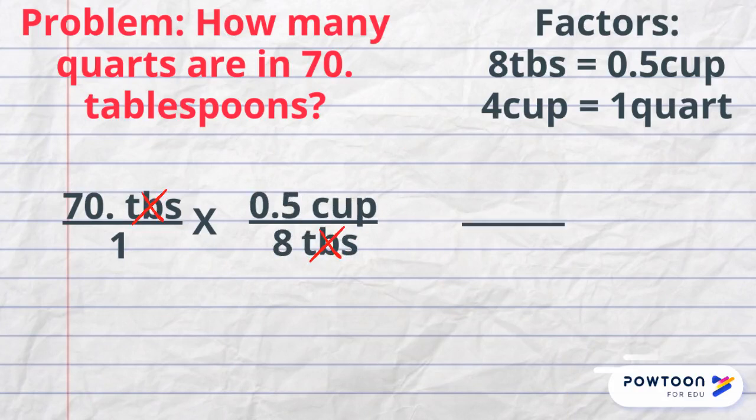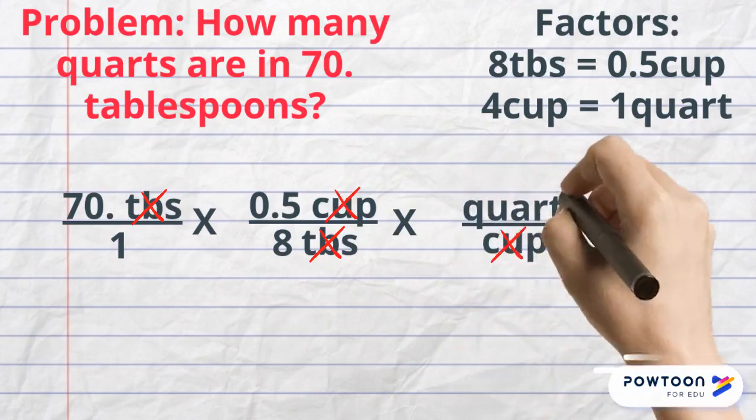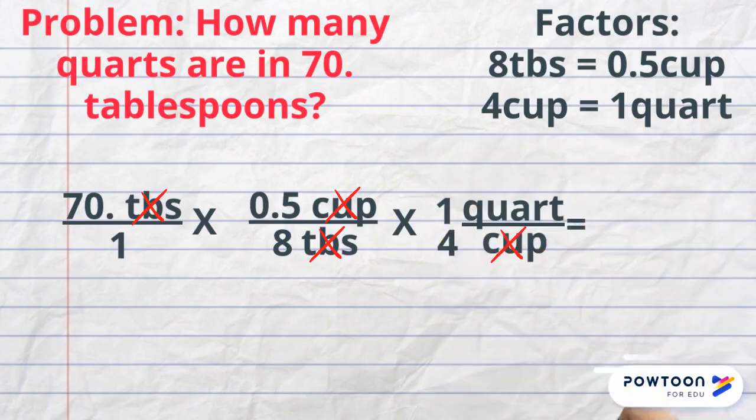Since we are looking for quarts, we're not finished. Multiply by another factor. We want to cancel cups, so this will go in the denominator and quarts in the numerator. Include the numbers, cancel units, and solve. You may prefer to do this in two steps, and that's okay.